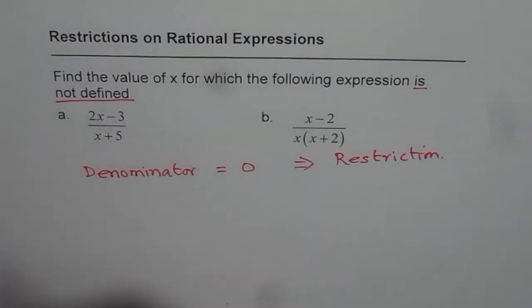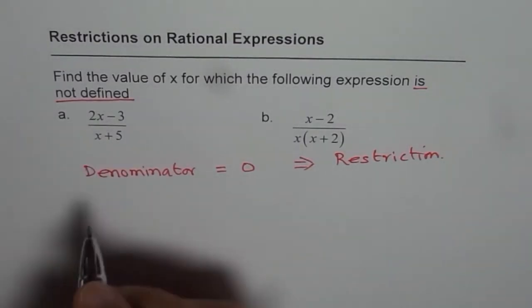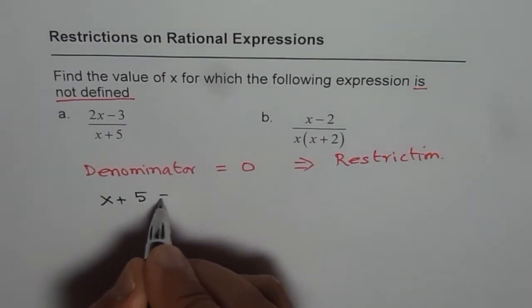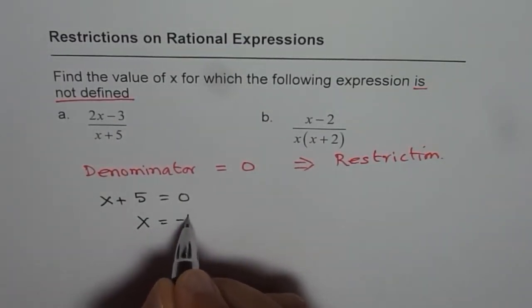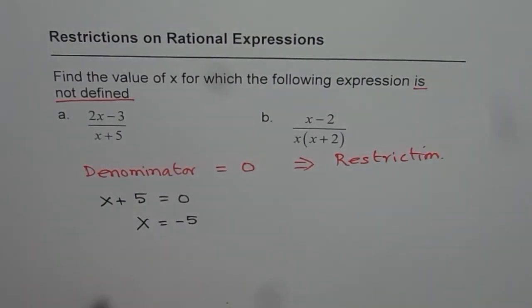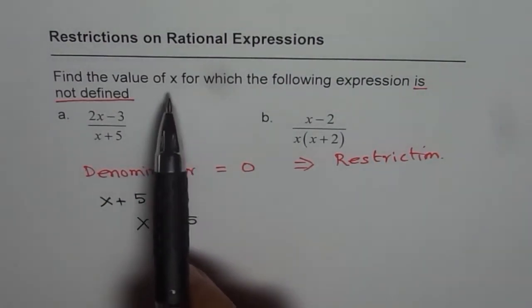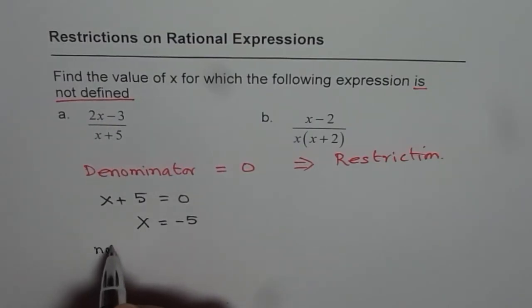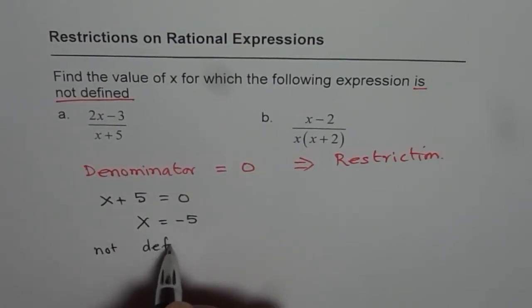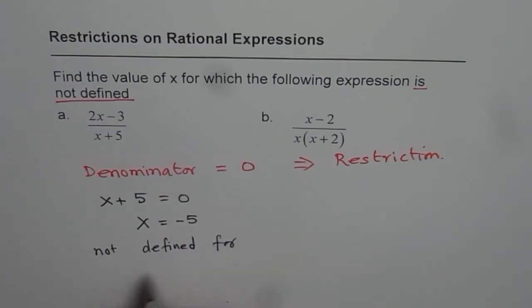Let us do part A. Denominator is x plus 5. So we say x plus 5 equals to 0 and then solve for x. We get x equals to minus 5. Now we can say that the value x is restricted. Expression is not defined for x equals to minus 5.